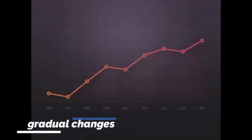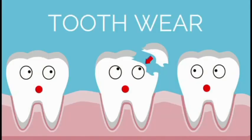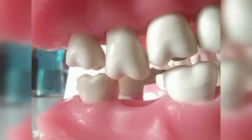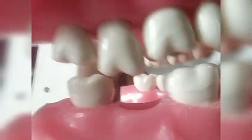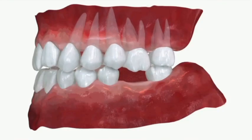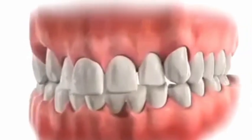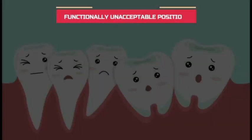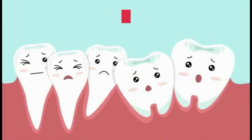Now let's discuss about chronic TFO. Chronic TFO occurs when there are gradual changes happening in the occlusion. The first cause will be tooth wear, which happens in cases of any parafunctional habits like bruxism. Otherwise, there is an unreplaced missing tooth, because of which there is a super-erupted tooth or drifting of the tooth. The next cause would be that orthodontically the tooth movement has been done to a functionally unacceptable position.